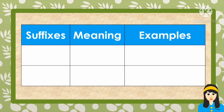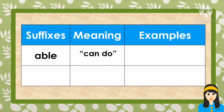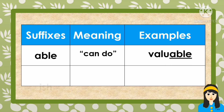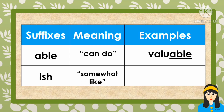Another example for suffixes. First one is able. The meaning of able is can do, and the example word is valuable. Second is ish. The meaning of ish is somewhat like, and the example word is blackish.